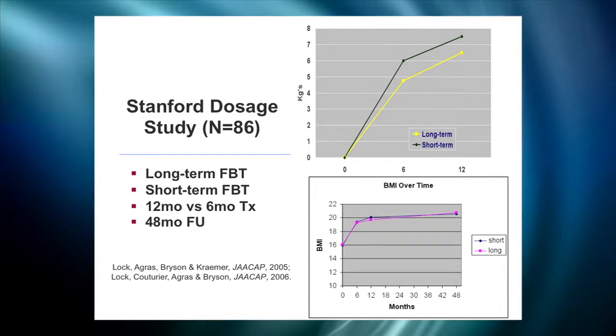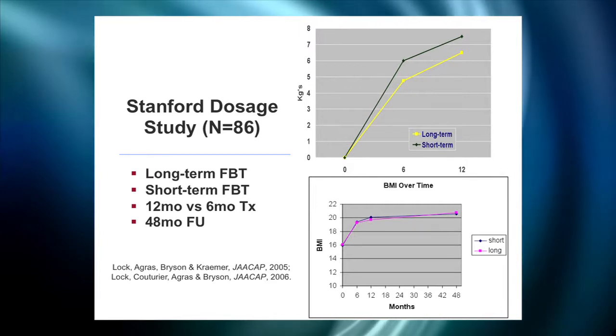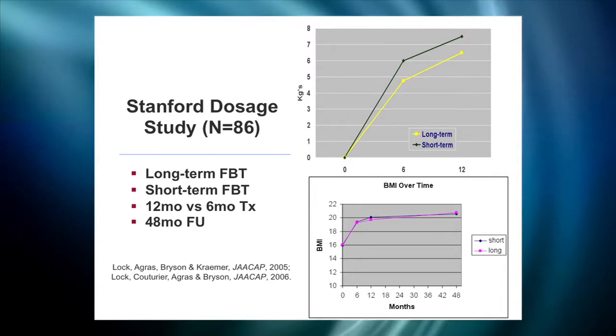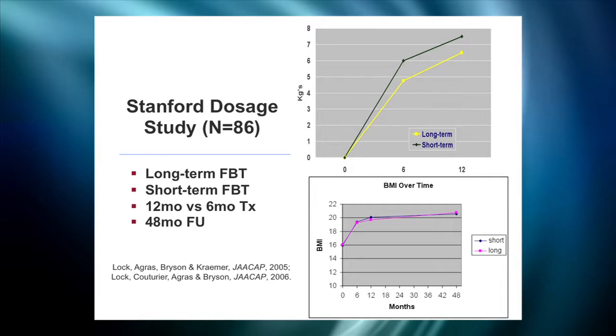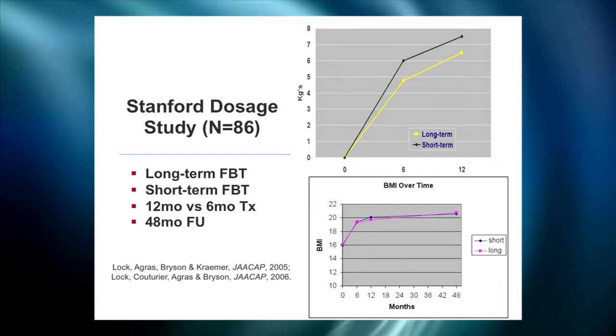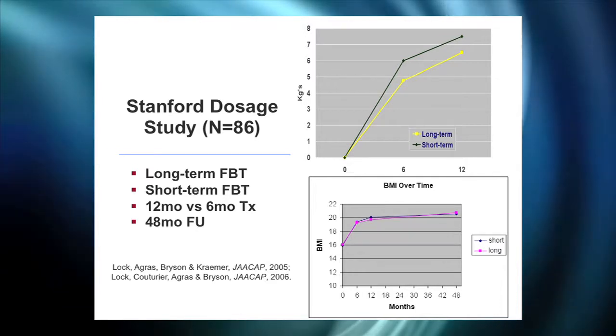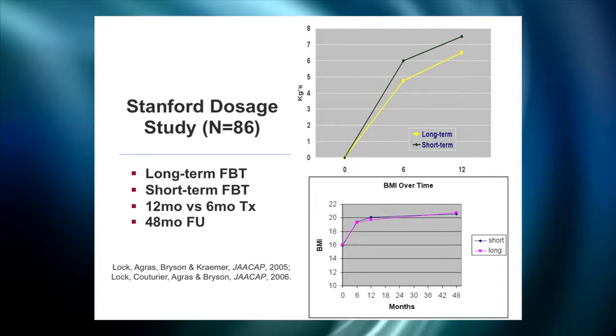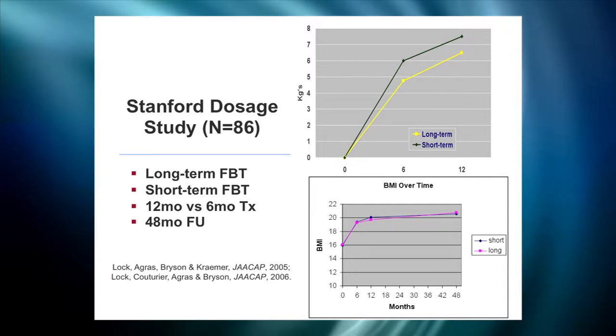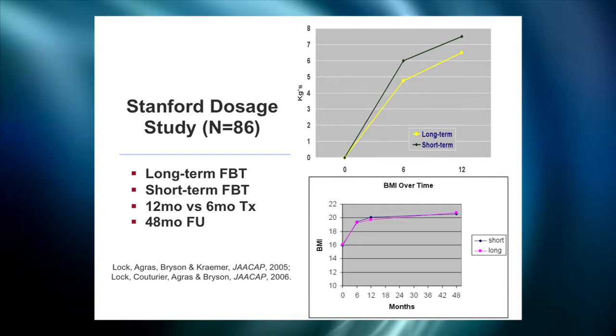At four-year follow-up of this cohort of 86 patients, irrespective of whether they received the short or longer version of treatment, patients were presenting with healthy BMIs of 21 for young adult females. The same findings were evident in the eating disorder examination, which measures typical cognitions and behaviors of someone with anorexia nervosa — a nice move towards the norm, with no difference between the two treatment groups. This clearly demonstrates that for a significant number of patients, less is more — you don't need long intensive treatment provided that we can identify this illness early on and intervene appropriately.